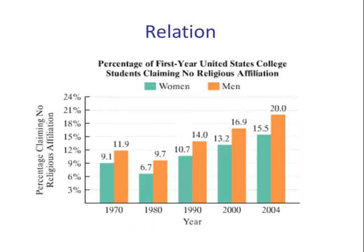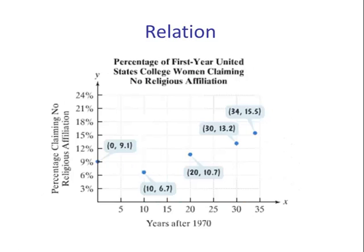Relation and function review. If you recall from our last video, a relation is a group of ordered pairs. Sometimes ordered pairs can explain the relationship between two variables. In this graph, we have the variable year and the percentage claiming no religious affiliation for first-year United States college students. We can make this into a relation by looking at, for example, the females. This is the number of years since 1970, so this is a group of ordered pairs, and this corresponds to the data from the previous slide.